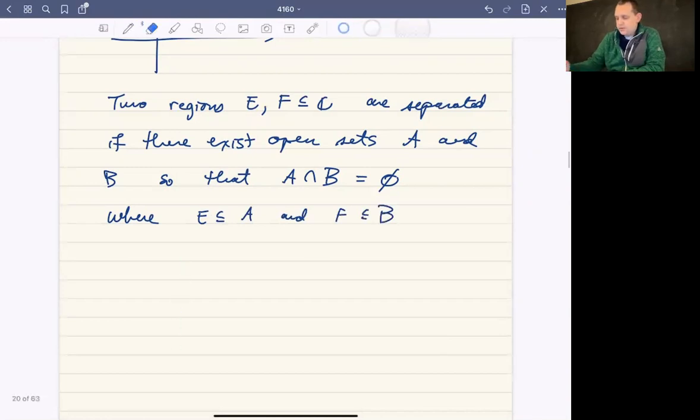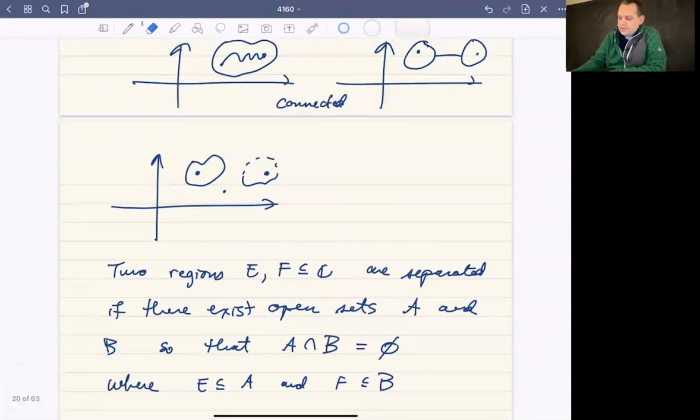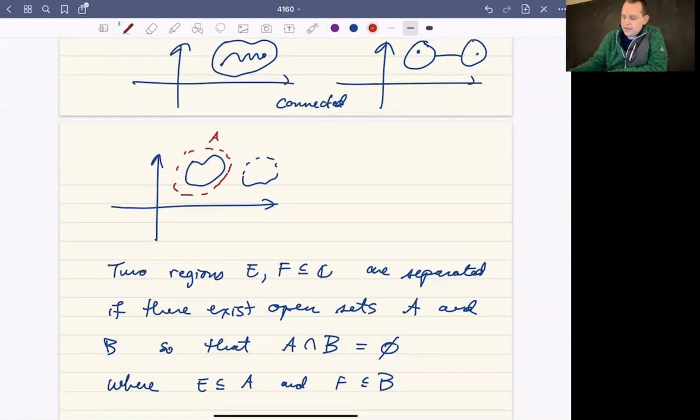So what that looks like graphically, if we just go back up to our picture, we could find open sets that don't overlap, say A and B, where this would be E and this would be F, where E is contained in A and F is contained in B. So there are disjoint open sets containing each of those two regions.